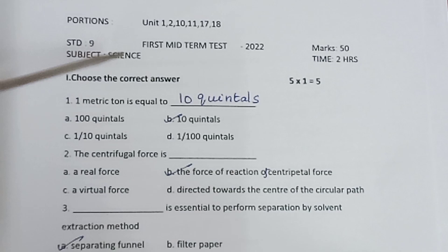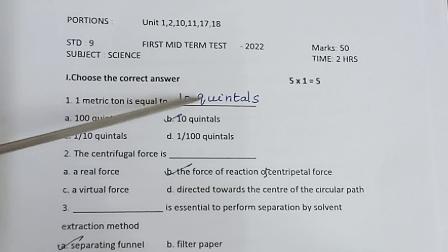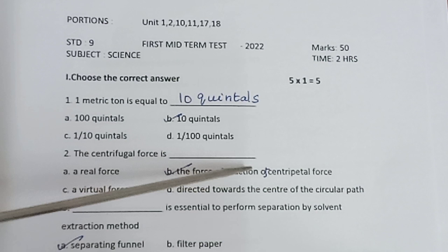Part 1: Choose the correct answer. 5 into 1 is equal to 5. Question 1: 1 metric ton is equal to 10 quintals.